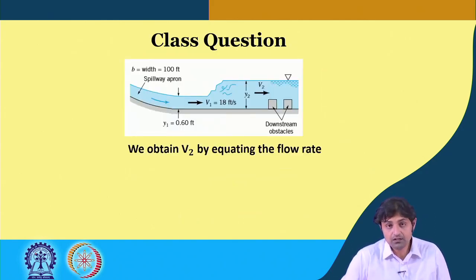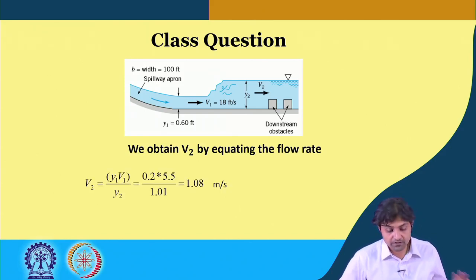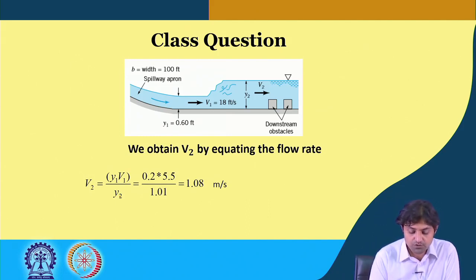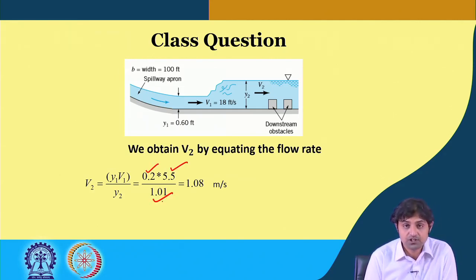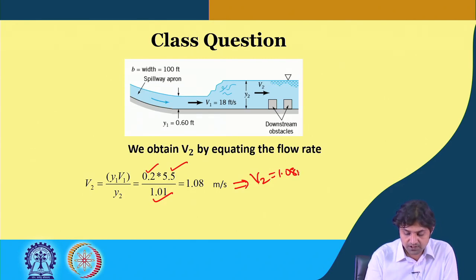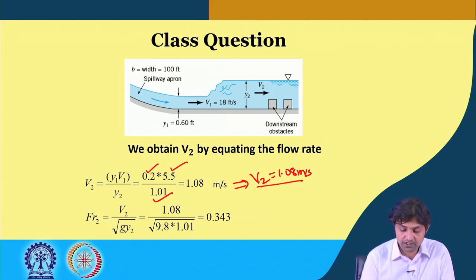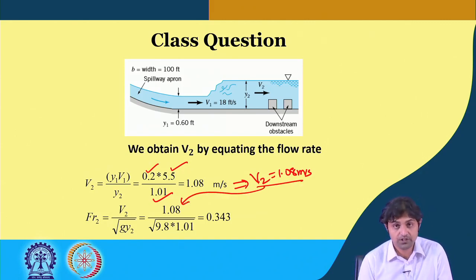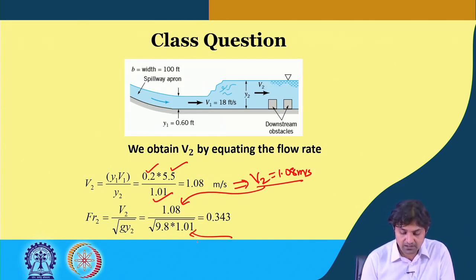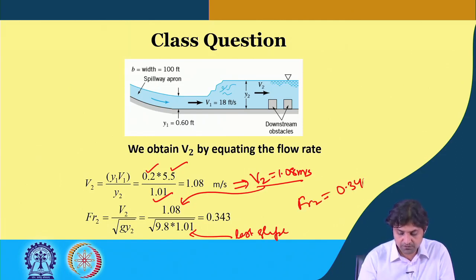We obtain V2 by equating the flow rate: A1·V1 = A2·V2, where width b cancels out. So V2 = V1·y1/y2. With y1, V1 known from before, and y2 just calculated, V2 comes out to be 1.08 meters per second. Therefore, the Froude number at location 2 is Fr2 = V2 / √(g·y2). This is the reason we calculated V2 — for computing the Froude number.